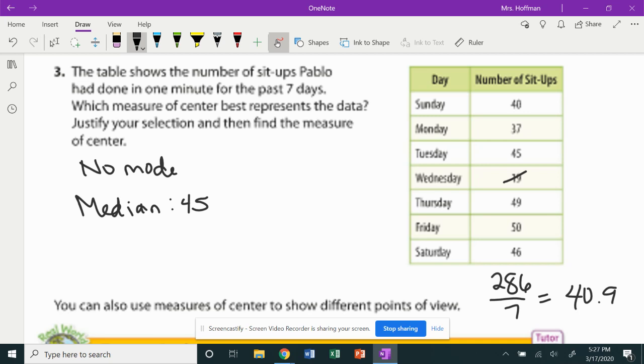Now we need to look at which of these is the most appropriate. So if our mode is no mode, our mean is 40.5. Oh goodness gracious. I meant to say 40.9. This isn't working for me guys. Well, the mean is 40.9 and the median is 45.